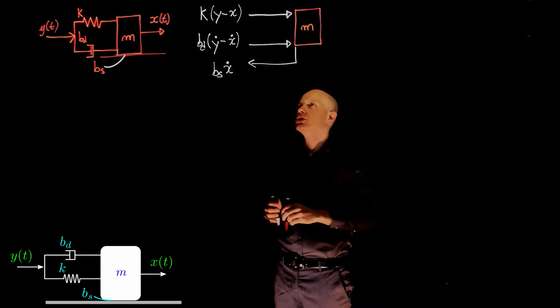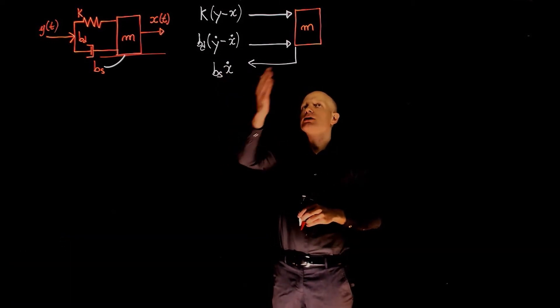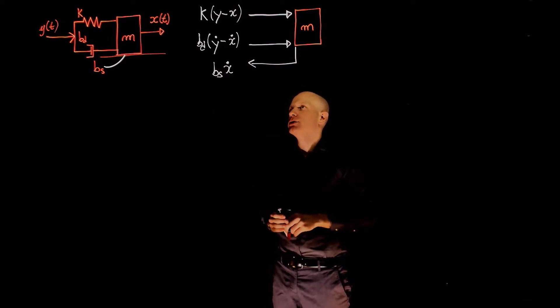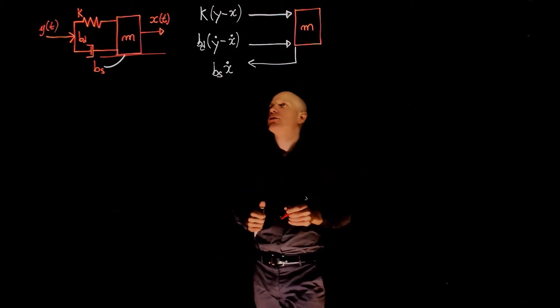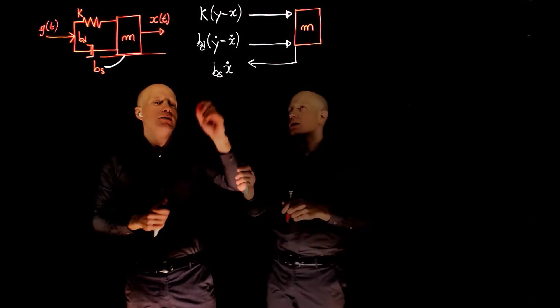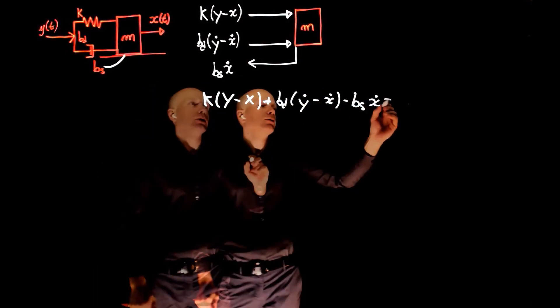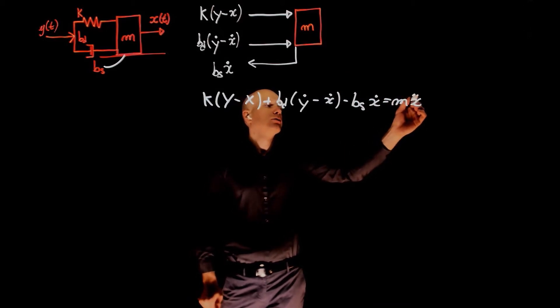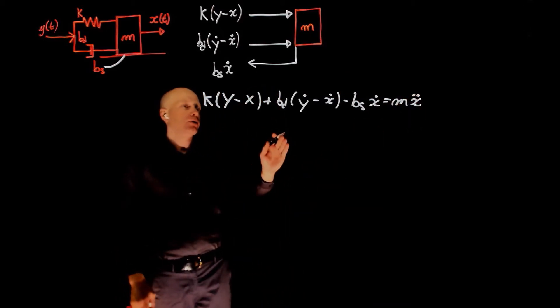We can now find the equation of motion by summing all these forces and equating that to m times x double dot, mass times acceleration. The sum of forces here will be k, and this is equal to mx double dot. This is in the time domain.